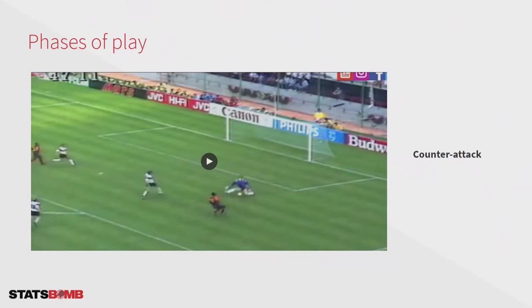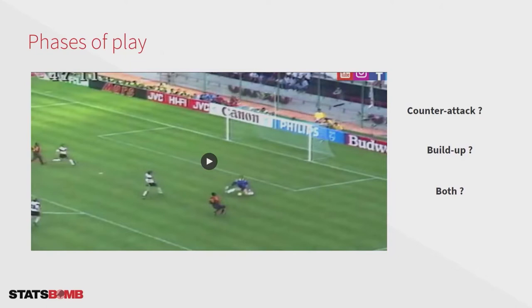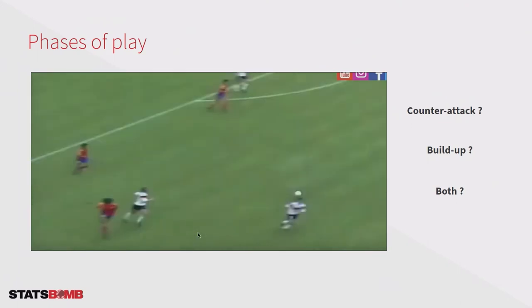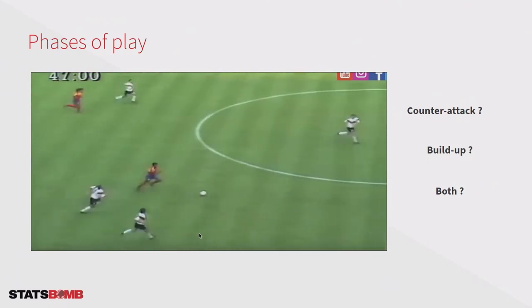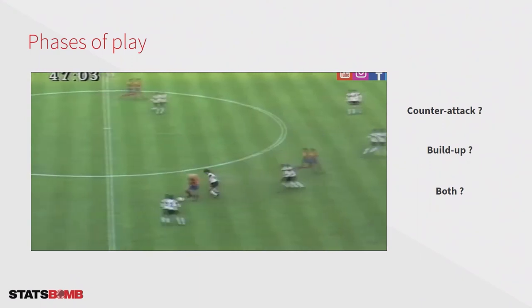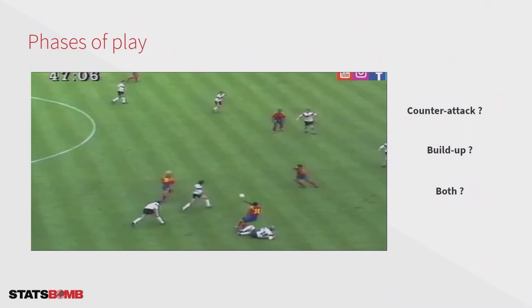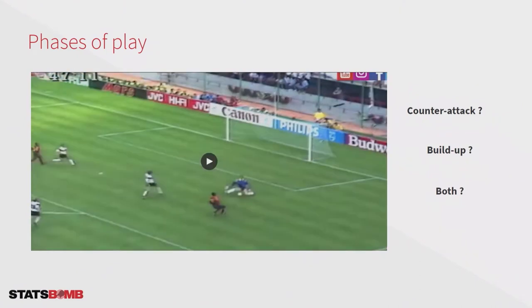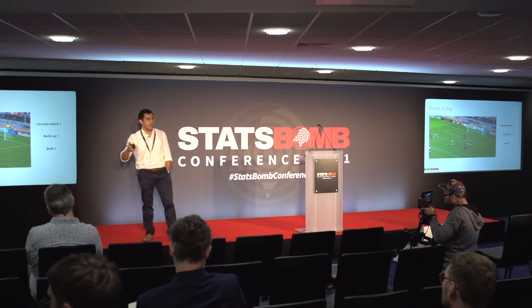At first sight I would say this possession is a counter-attack. However, when I was discussing this with some colleagues, one of them told me: 'Hey Juan, this is not a counter-attack. At the beginning it can be considered as one, but when Valderrama gets the ball and makes a pass, the defense team has some time to recover their shape and line-up — and in that moment it's a build-up.' So I found many of these ambiguous examples: is it a counter-attack? A build-up? A maintenance? I'm not sure.